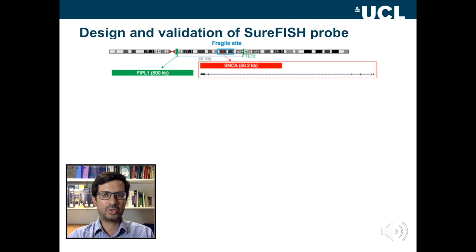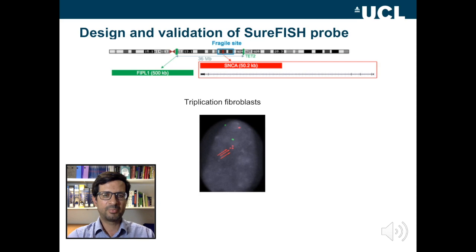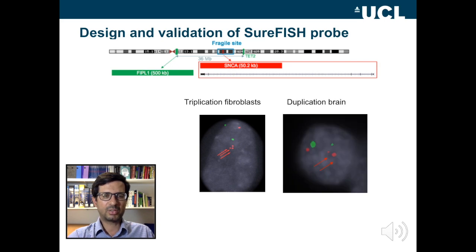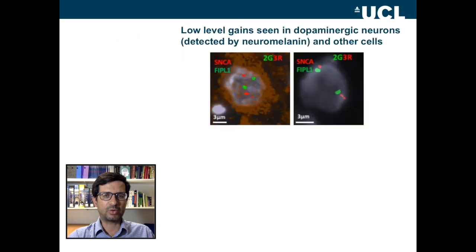We designed a probe specifically to cover part of the synuclein gene without any background. There's a reference probe of a different color so we can normalize our findings. We tested our probes on a fibroblast cell line that should have three copies of synuclein on one chromosome — here they are with the arrows — and also on a brain kindly provided by Bristol Brain Bank, which was a known duplication case, so you can see there are two copies of the gene on one chromosome.